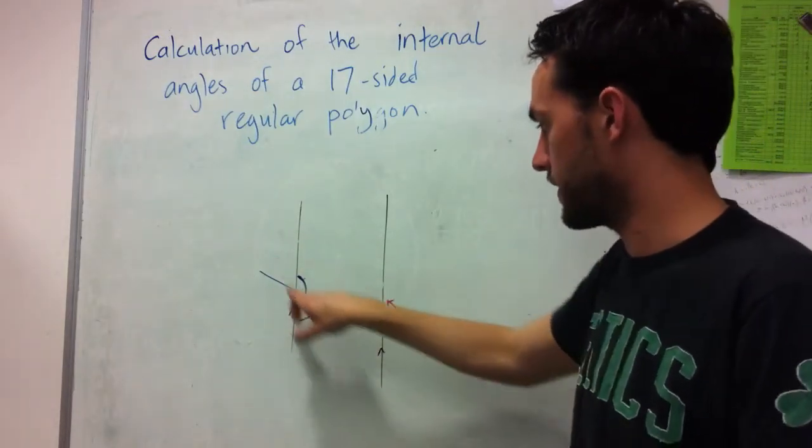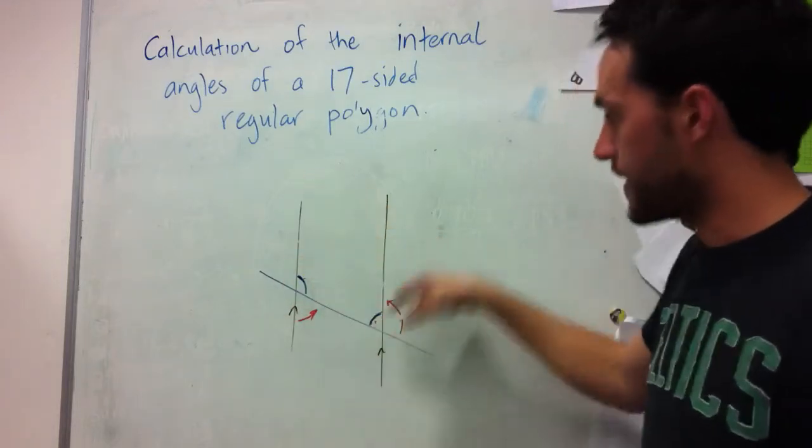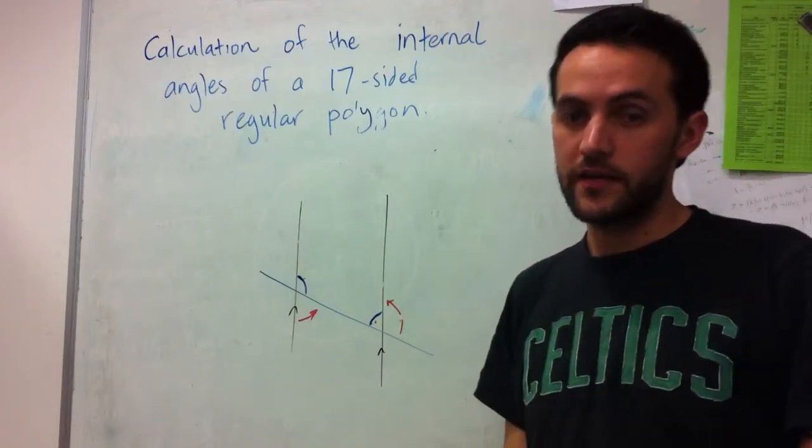This angle here will be the same as this one, which then, in turn, will give us that one there. So that has to be 180 degrees all up.